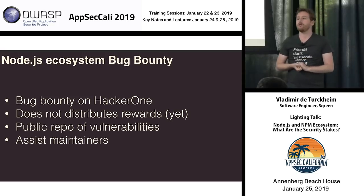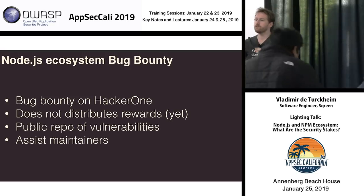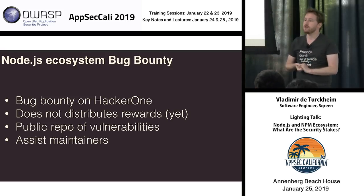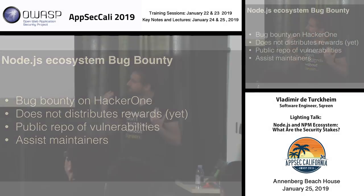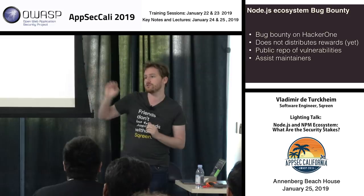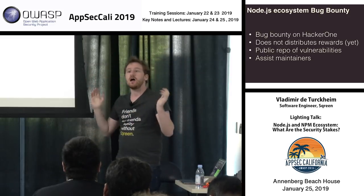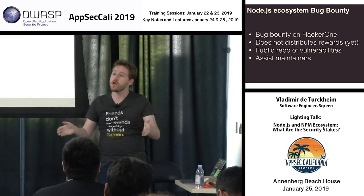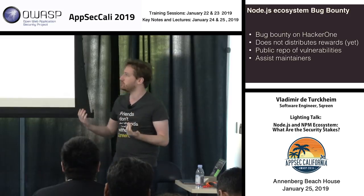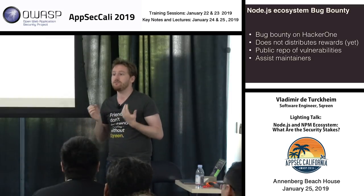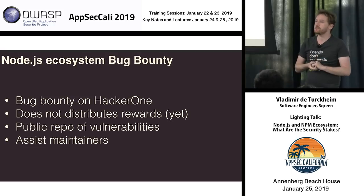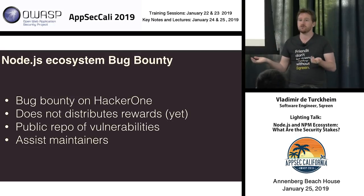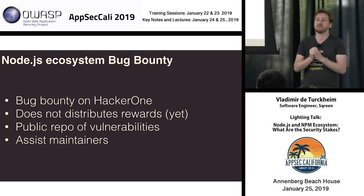There is also a second bug bounty program for the ecosystem — remember those millions of packages on NPM. You can't get rewards for it yet, but two weeks ago Kanbais contacted us wanting to sponsor it, so we'll soon start giving rewards for some vulnerabilities. For instance, a researcher named Olivier Artaud just came to us and said he found 20 vulnerabilities — the same one in 20 different packages — and we helped fix them together across the ecosystem. We also have a public repo of vulnerabilities for core and ecosystem under MIT license, so feel free to build tooling using this dataset.